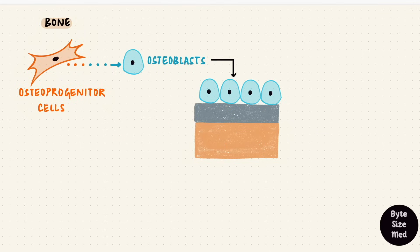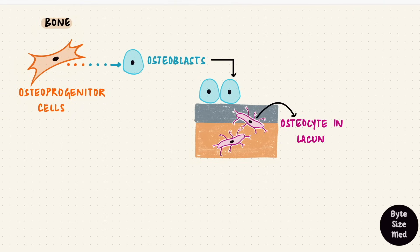During this process, some of the osteoblasts get trapped in the matrix and differentiate into osteocytes, which are also located in spaces, one in each lacuna. Bone also has osteoclasts, which are multinucleated giant cells that resorb bone. They digest the bone matrix.